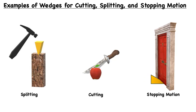This is different to what we've looked at so far, because we're not splitting, cutting, fracturing, or breaking. We're actually just using the wedge to stop motion. A wedge, as its name suggests, can wedge between two surfaces or two structures, such as the floor and a door.